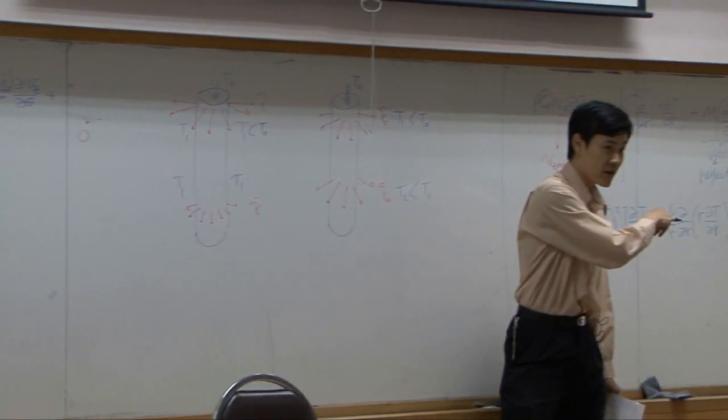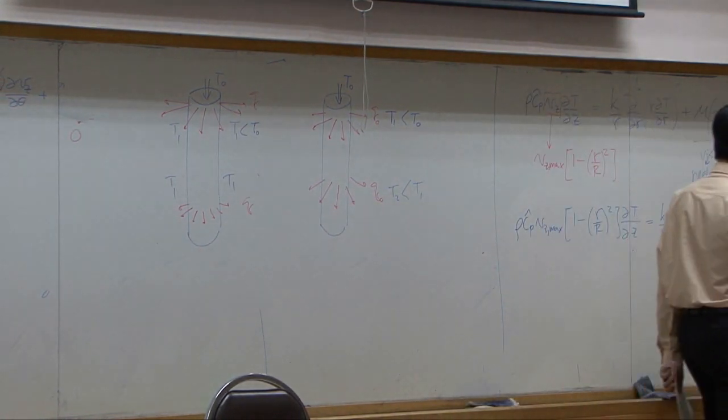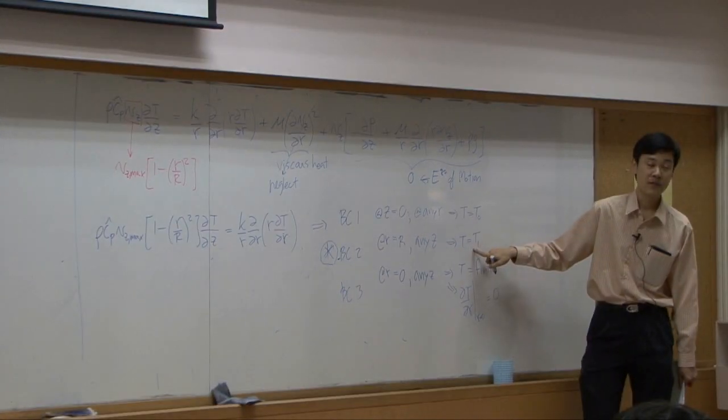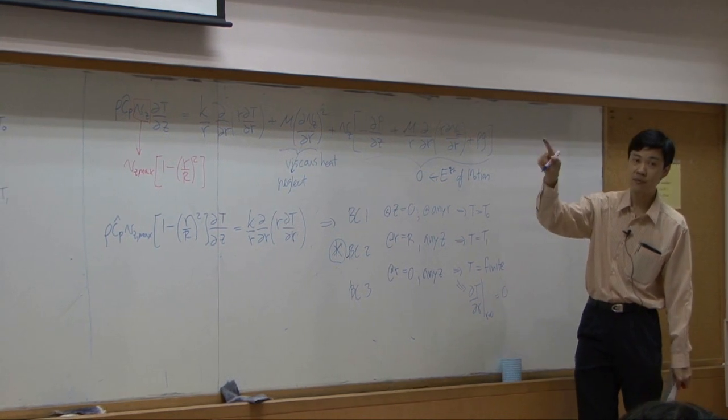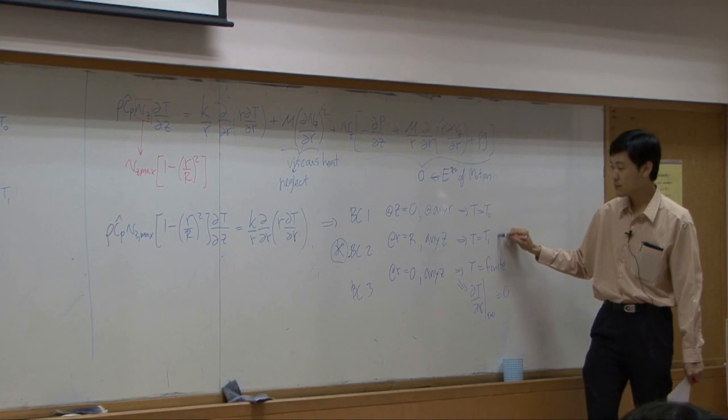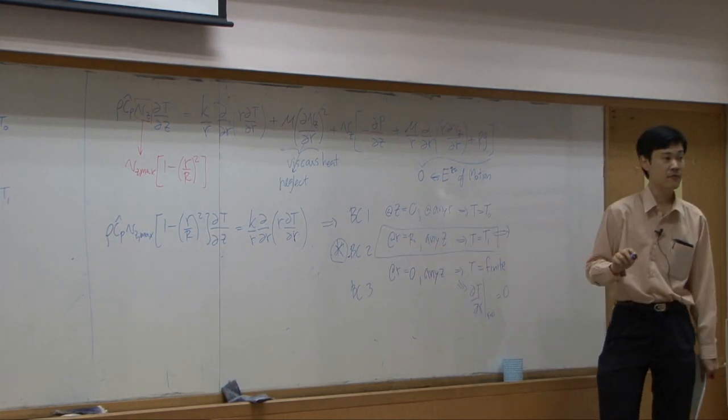For our problem here, it's constant temperature. So therefore, we can take this boundary condition. We take temperature outside to be constant. That's constant temperature. If we change the problem from constant temperature to constant heat flux, this one's supposed to be changed. What does it look like if the problem is constant heat flux?